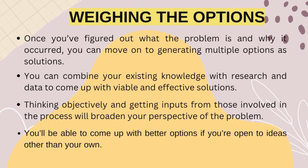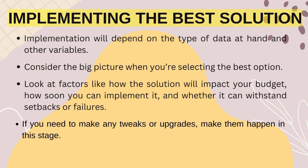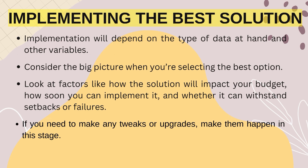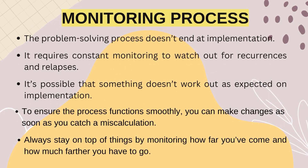The third step is weighing the options: you have multiple possible solutions and you think about each option in detail. The fourth step is implementing the best solution: consider the big picture — factors like how the solution will impact your budget, how soon you can implement it, and whether it can withstand setbacks or failures. If you need to make any tweaks or upgrades, make them happen at this stage. The fifth step is monitoring: after implementing the best option, you can still decide whether things are moving in the right direction, and if not, you have the option to modify or change your decision.